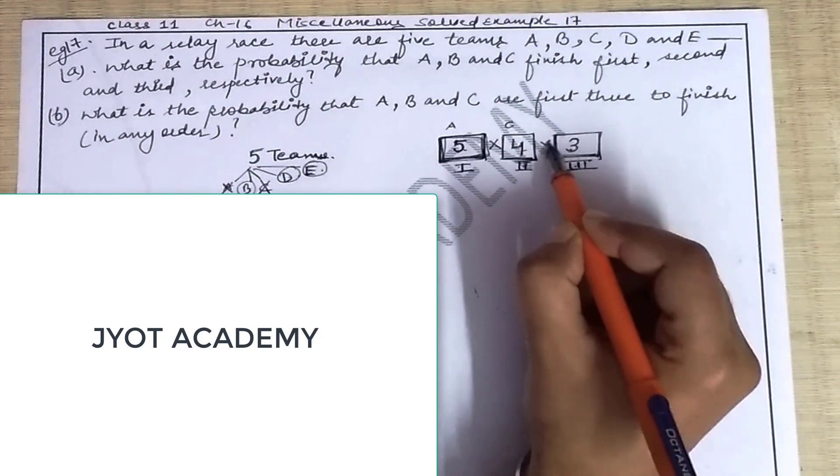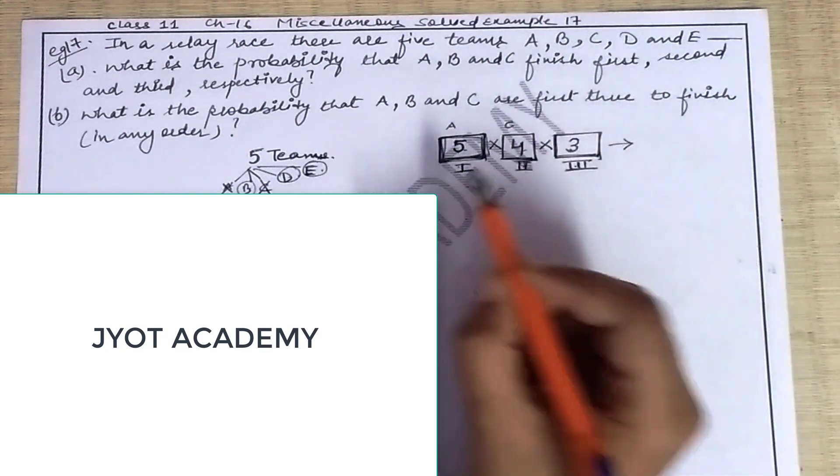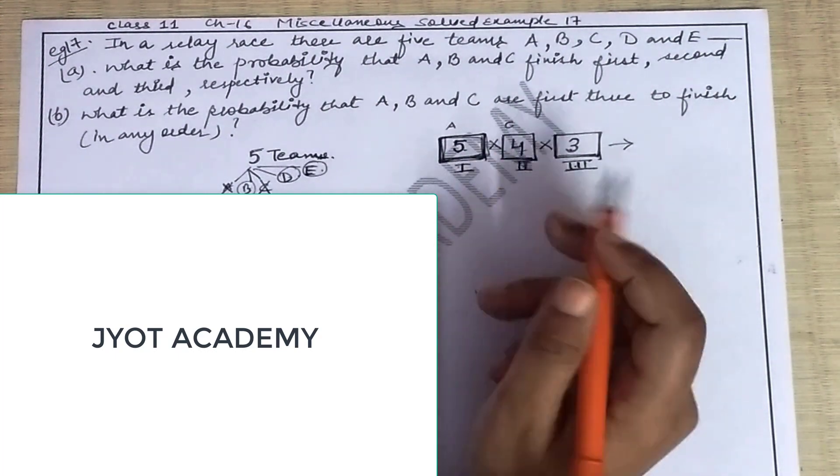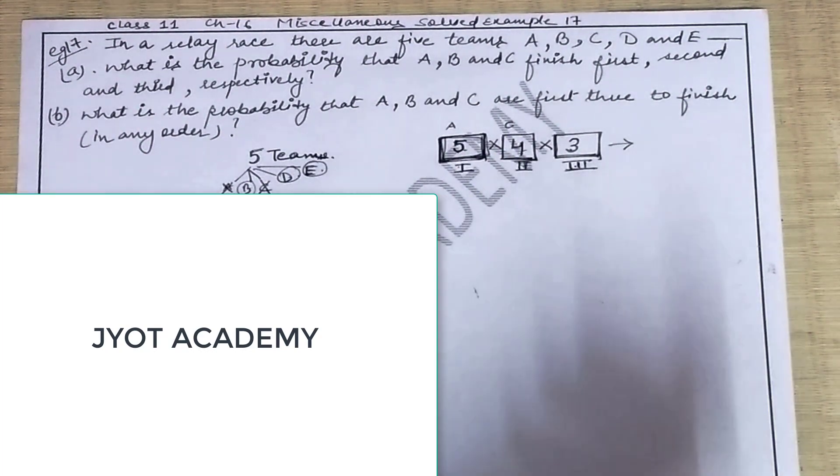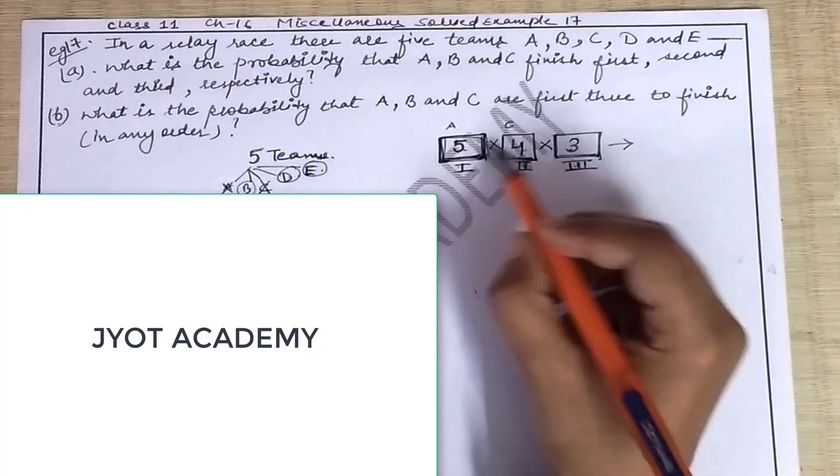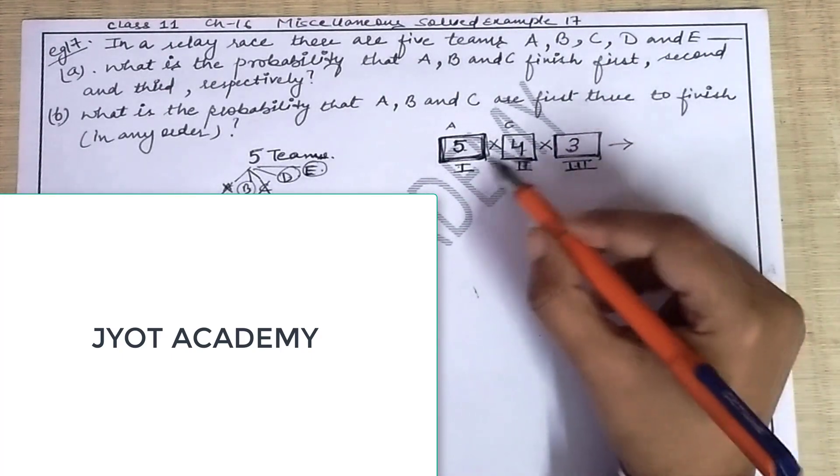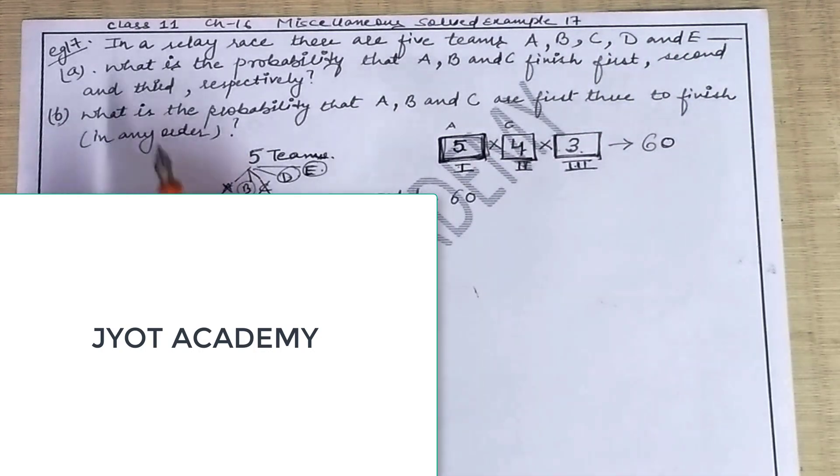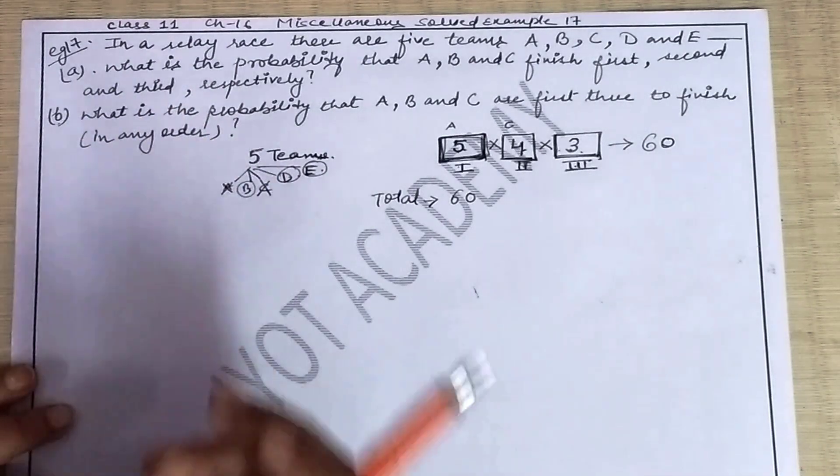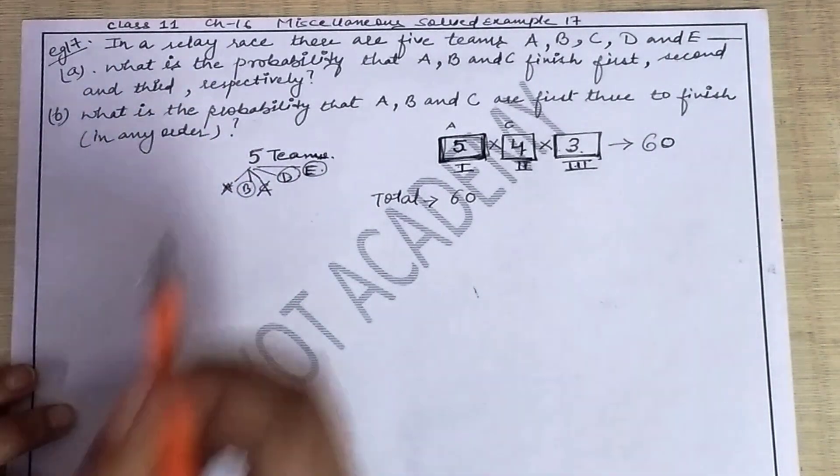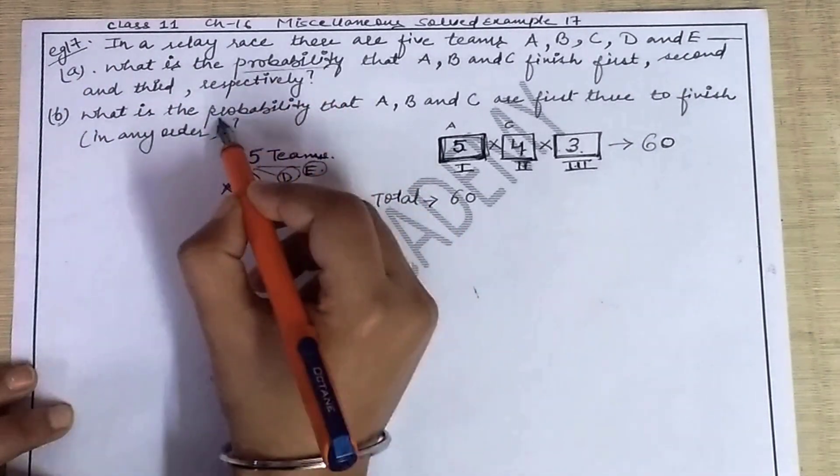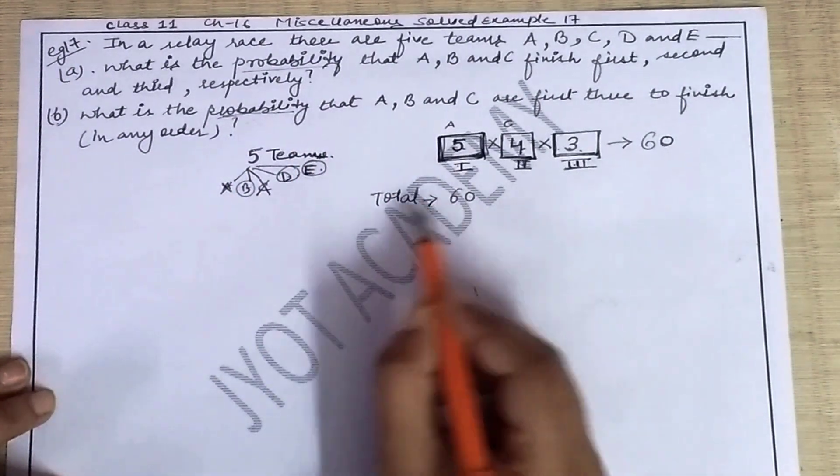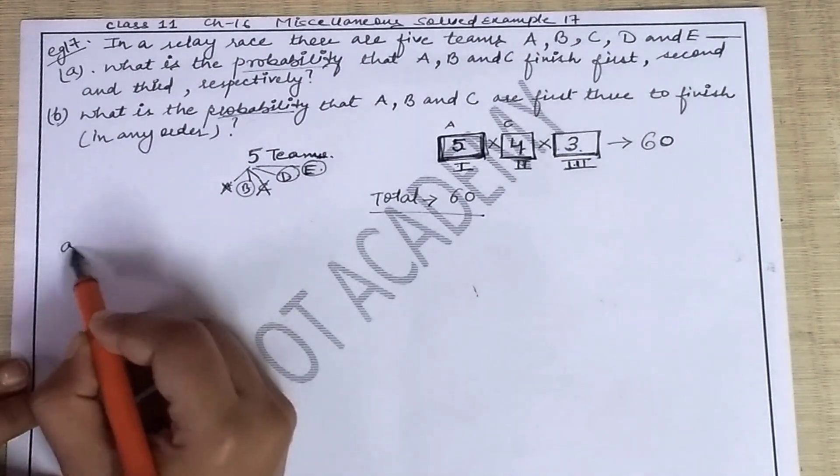So five into four into three ways means any team from the five teams can come to these particular positions. So your total value is five into four into three, that is sixty. Now we have conditions given, and based on those we'll find the answer. Both conditions require you to find probability. So whenever you need to find probability, at the base you take the total value which I've found for you.